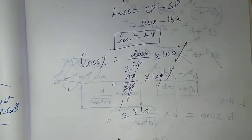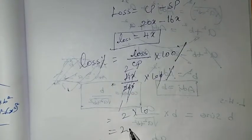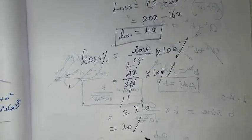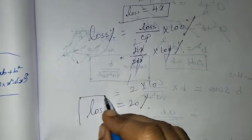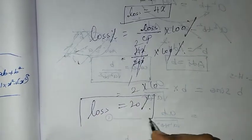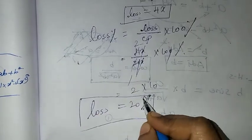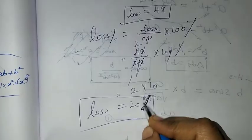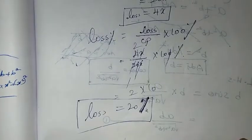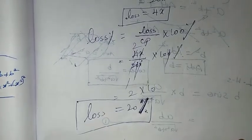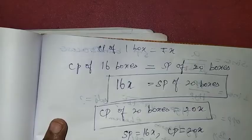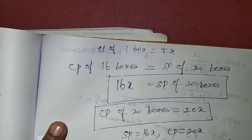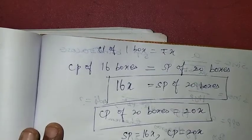After cancelling x and simplifying, the result is 20%. So the loss is 20%. It is a simple sum — if you understand the concept, you will understand the solution.